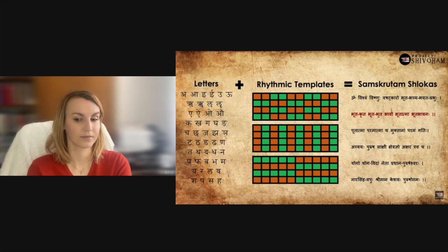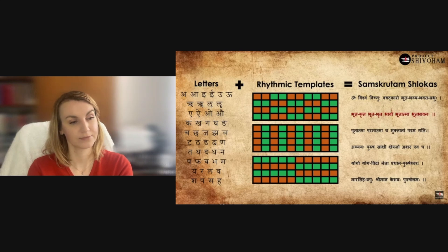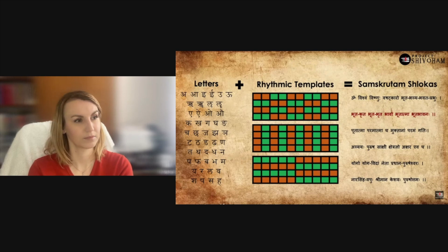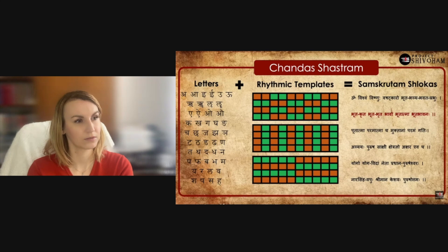Take this piece of Vishnu Sahasranamam, for instance. As you can listen, there is a rhythm embedded in Vishnu Sahasranamam. That is because a rhythmic template called Anustub was chosen to create Vishnu Sahasranamam by Bhishmacharya. The base for Vishnu Sahasranamam is the rhythmic template called Anustub Chandas, and this template enforces you to create words which, when put together, create a harmonious effect when recited.